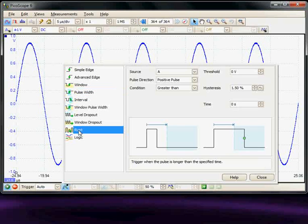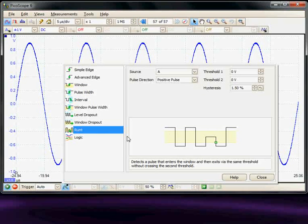The advanced trigger library also has the runt trigger. This is an amplitude advanced library where we have two trigger levels and we can trigger when a non-full-height pulse occurs in a sequence.